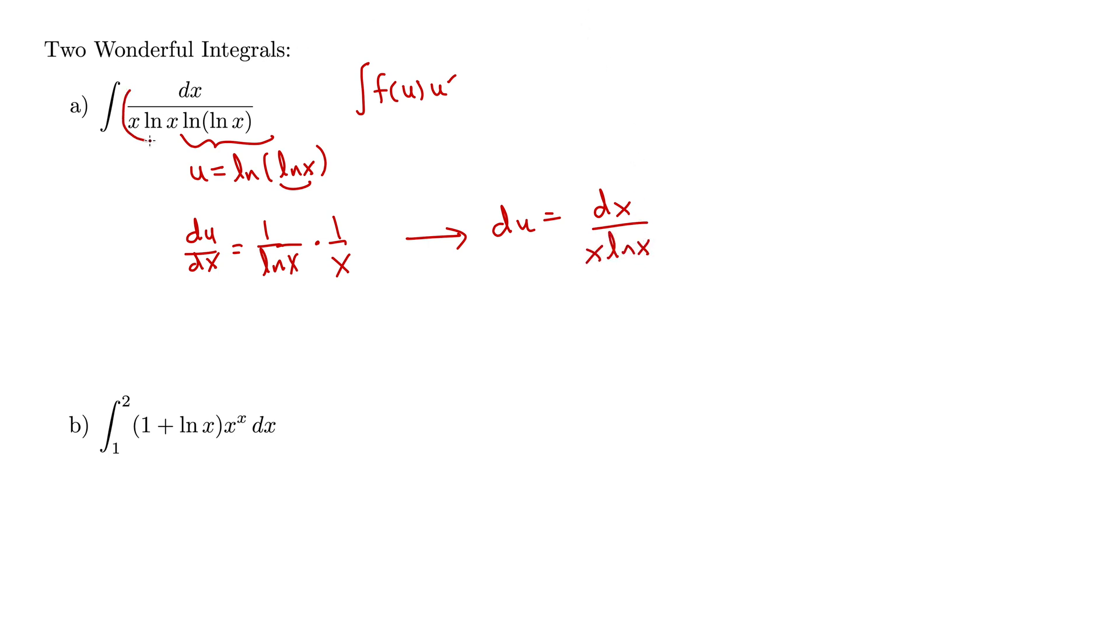And look right there, there's our entire du, right in our integral there. So you can just substitute straight in, or you can solve this for dx, then dx is x natural log x times du, and then sub this all in up here for dx. So what does this give us, finally?